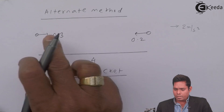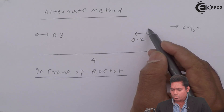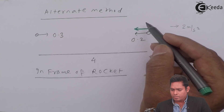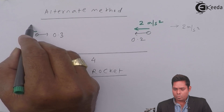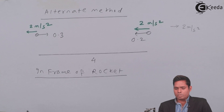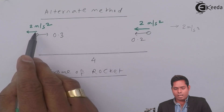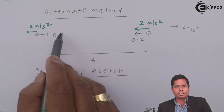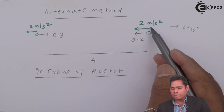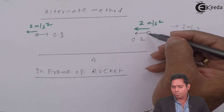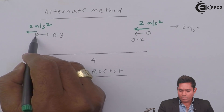In the non-inertial frame of the rocket, we must use pseudo-force. Since the rocket accelerates in the positive direction, a pseudo-force acts on each object towards the left with an acceleration of 2 meter per second square. The left ball (A) has its speed increasing due to this acceleration, while the right ball (B) has its speed decreasing and will eventually return.